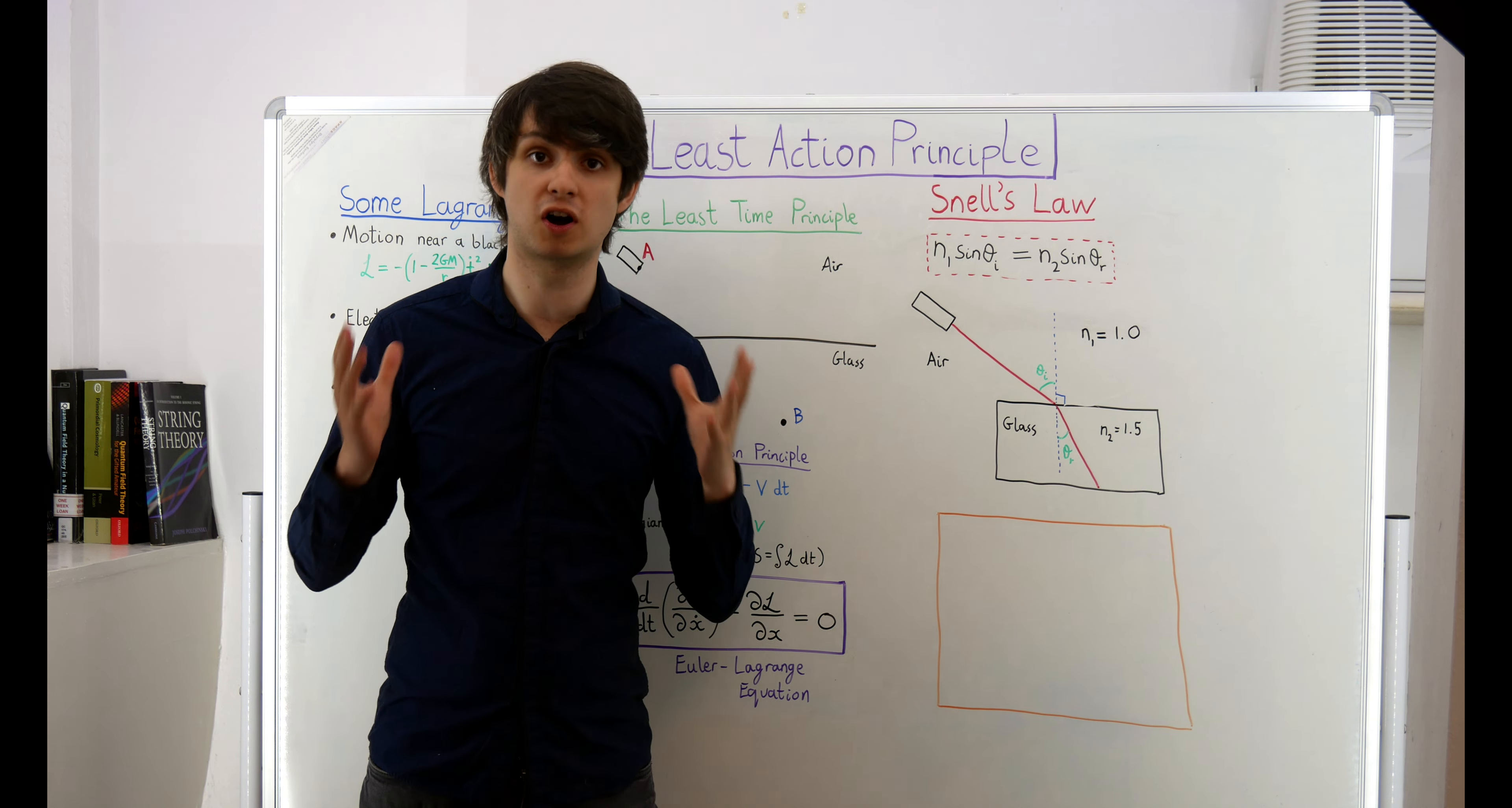which tells us how light is refracted when it travels from one medium to another. Let's suppose that we shine a ray of light at a glass block. Upon hitting the boundary between the air and the glass, the light ray is refracted, meaning it changes direction. Now, the air and the glass are each characterised by a certain number called their refractive index, which is essentially a measure of how fast light travels through that substance. The slower light travels through a substance, the higher its refractive index.